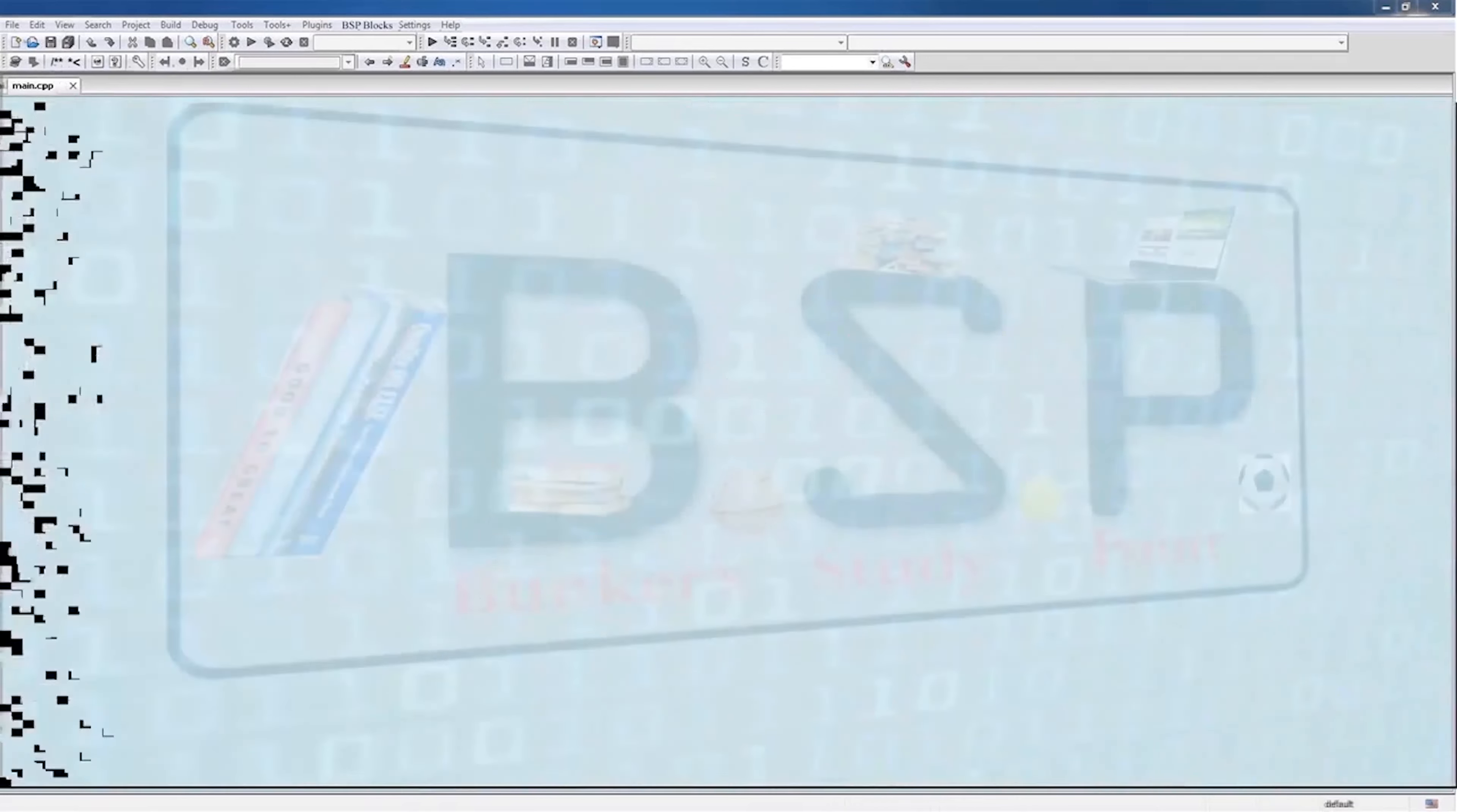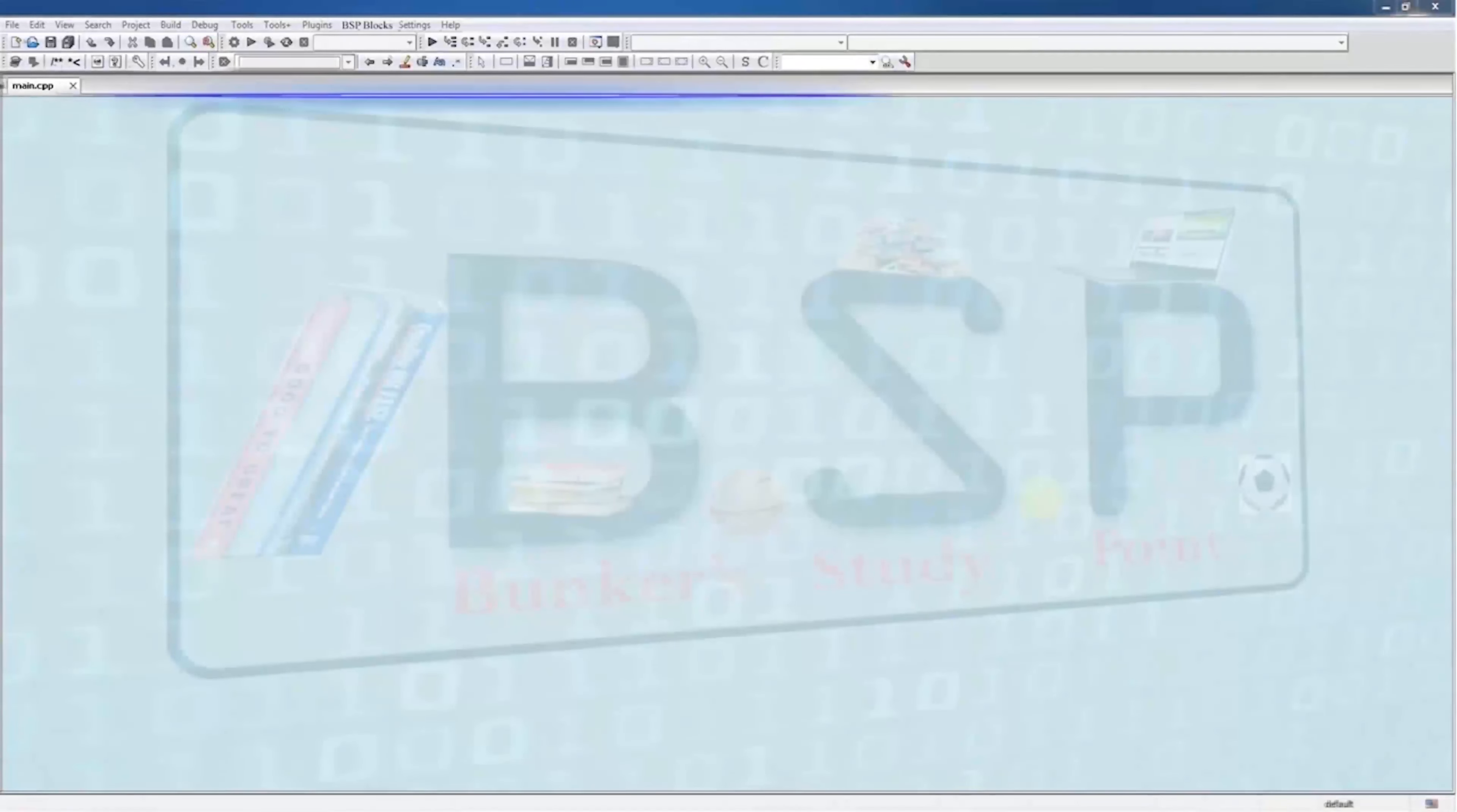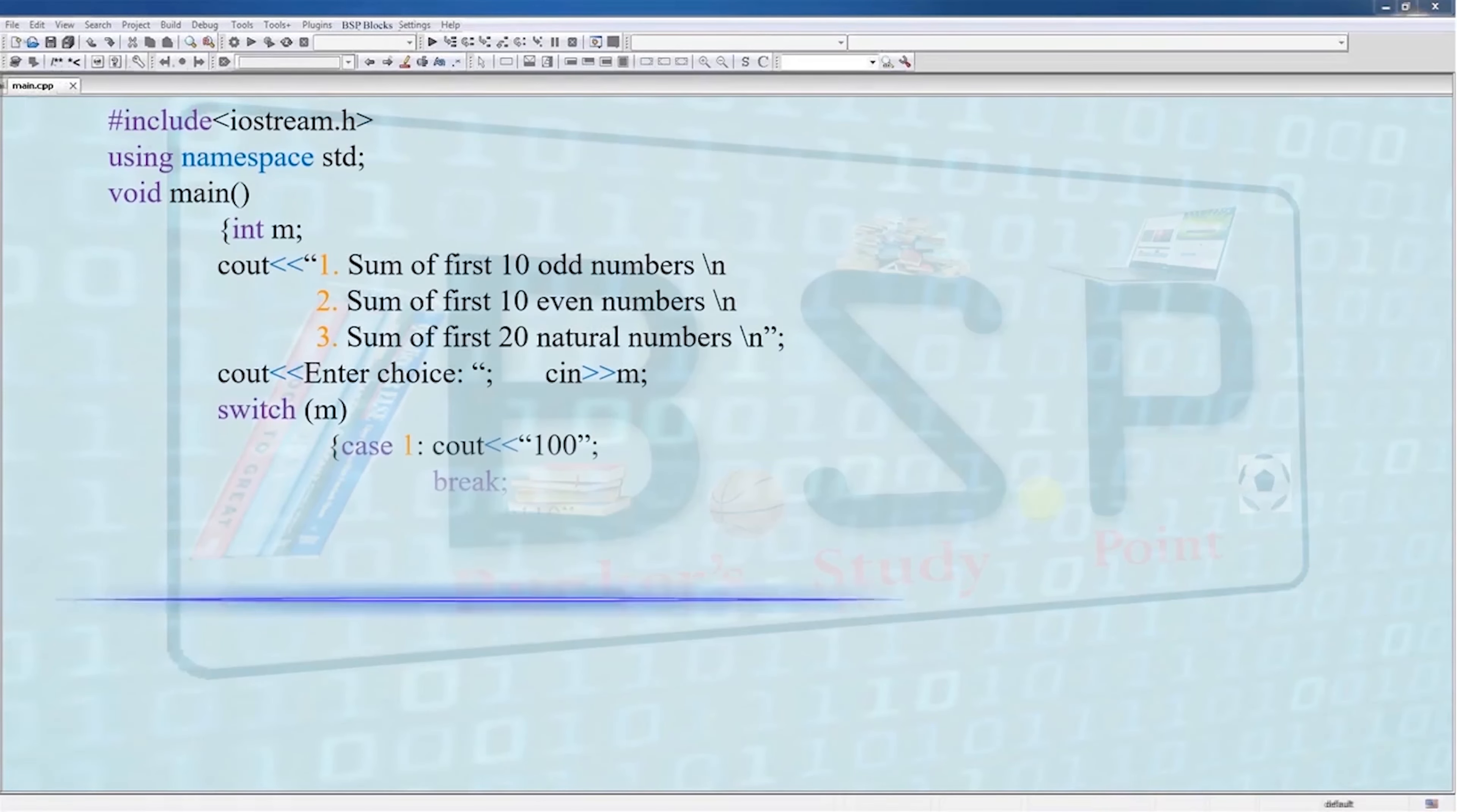The program will somewhat look like this. Int m to contain our checking or our testing value. Cout sum of first 10 odd numbers, first 10 even numbers, first 20 natural numbers preceded by 1, 2, and 3 that are the options. Then we have a cout for enter choice and then a cin m.